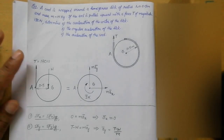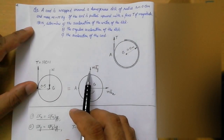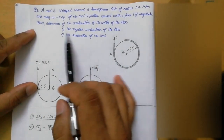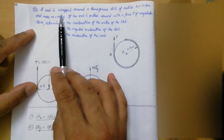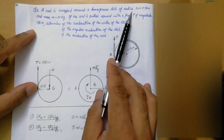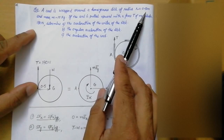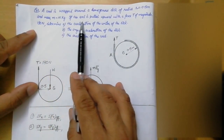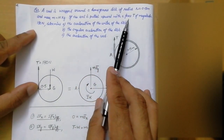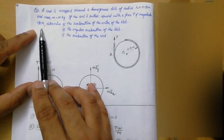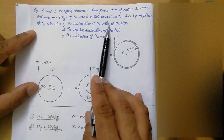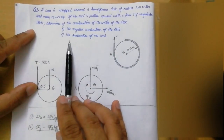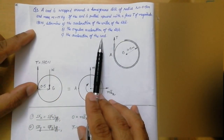Hello students, today I will talk about the third numerical on plane motion of rigid bodies — forces and acceleration. A cord is wrapped around a homogeneous disk of radius r equal to 0.5 meter and mass m equal to 15 kilogram. If the cord is pulled upward with a force T of magnitude 180 newton, determine: the acceleration of the center of the disc, the angular acceleration of the disc, and the acceleration of the cord.